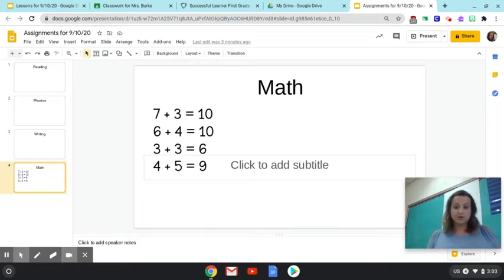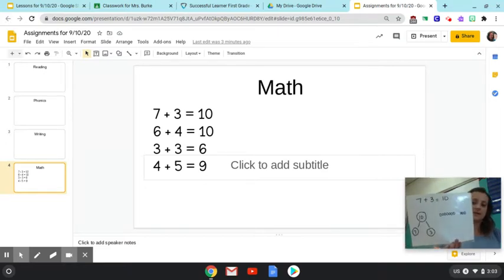And the other thing is we're just going to draw a picture to go with the sentence. So if I saw seven plus three, I draw seven dots, one, two, three, four, five, six, seven, three dots, one, two, three. And I have a picture that matches seven plus three equals 10.